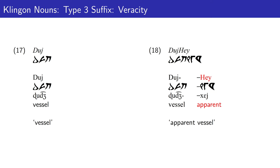The suffix 'haj' marks something as apparent. In the book, the author gives an example of an apparent vessel — one that may have come up on sensors but has not yet been confirmed.